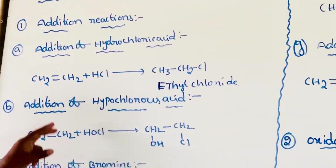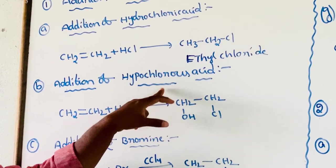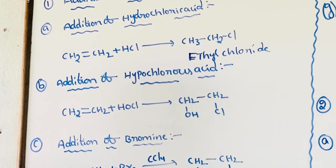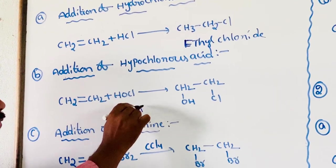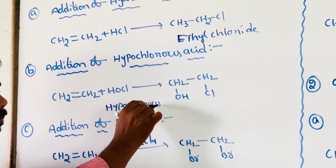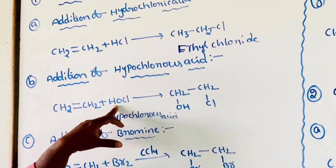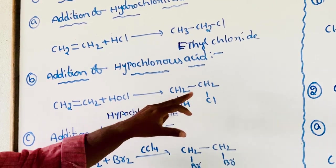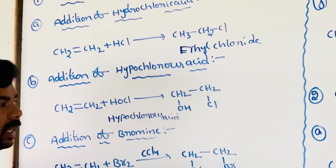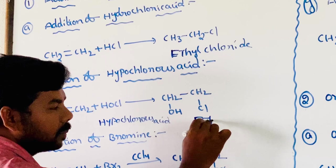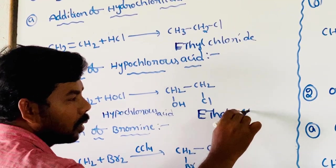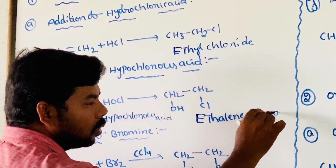Second, addition of hypochlorous acid. Hypochlorous acid formula is HOCl. Ethene reacts with or adds hypochlorous acid to give ethylene chlorohydrin.